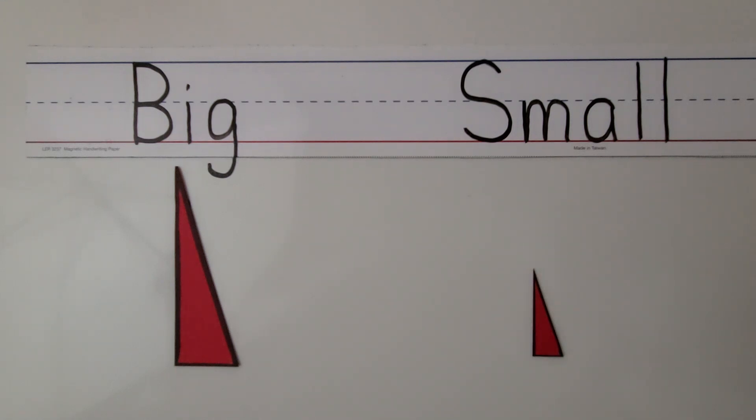A category is a group or set and we can sort and classify these triangles into different categories by their size. We have big and small. Their color doesn't matter. Their shape doesn't matter. Only their size is important. We put the big triangle under the word big. We put the small triangle under the word small.